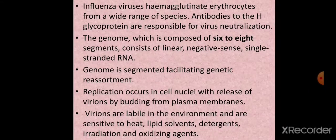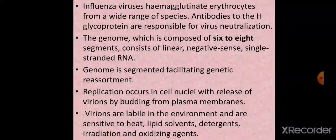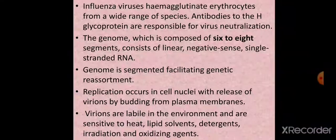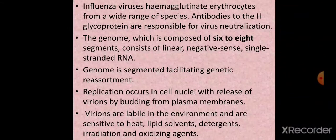Now, another very important distinguishing feature of orthomyxoviridae from paramyxoviridae is the genome: it is segmented, composed of six to eight segments. Unlike a normal linear continuous genome, in orthomyxoviridae the linear genome is segmented into six to eight segments consisting of linear negative-sense single-stranded RNA.